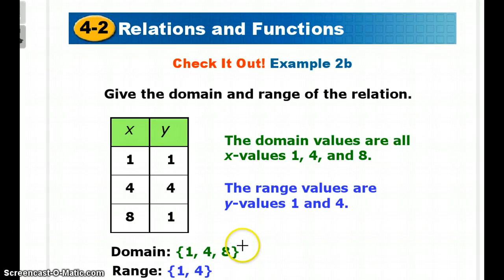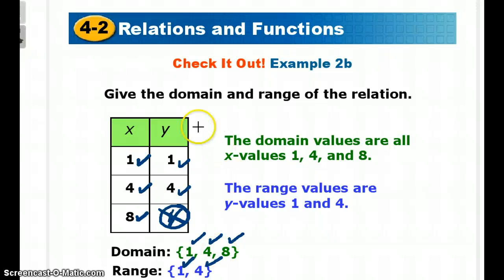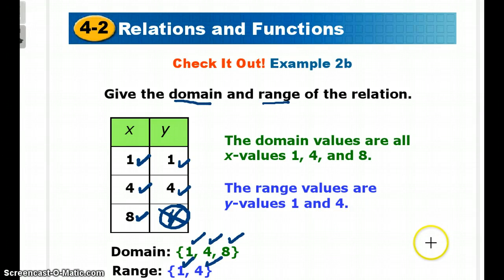In the last example, my domain is limited to {1, 4, 8}, and my range — I have a 1 and a 4, no need to repeat — is {1, 4}. So the x values I can choose are 1, 4, and 8, and the outputs I will always get are 1 and 4. We'll have plenty of time to practice tomorrow. Make sure you have good notes so you can explain the difference between domain and range, and the three different representations: table, graph, and mapping diagram for ordered pairs. Write down any questions you have on the video. Bye-bye.